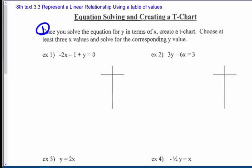choose at least three x values and solve for the corresponding y values. Okay, so first thing I've got to do is solve number 1 for y and all the other things on the other side of the equation, which means I'll have to add 2x and I'll have to add 1 to both sides, add 2x and add 1. These will cancel and I get y equals 2x plus 1.